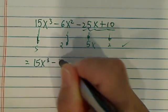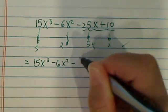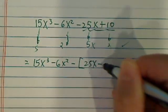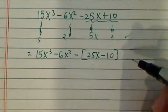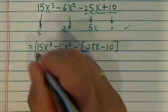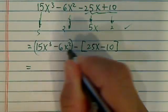equal to (15x³ - 6x²) minus, let's put a parenthesis here, (25x - 10), okay, because I put a parenthesis there. And then what I'm going to do is pull the common factor out.